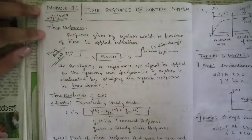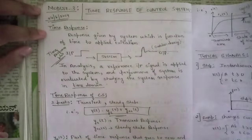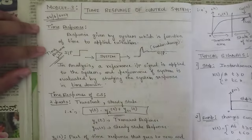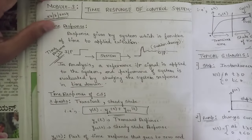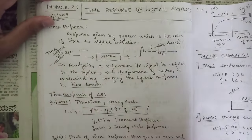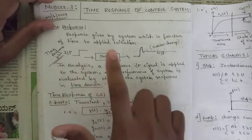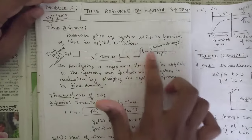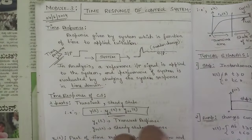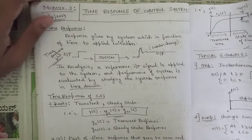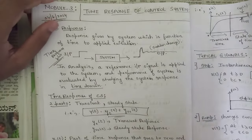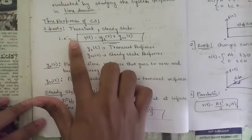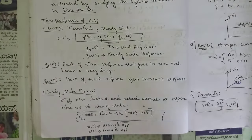The next module is Module 3, that is time response of control system. The time response means the response of a given system as a function of time when an excitation is applied. Whatever change we get in the output due to that input is called the time response, and time response specifications have some important parameters.